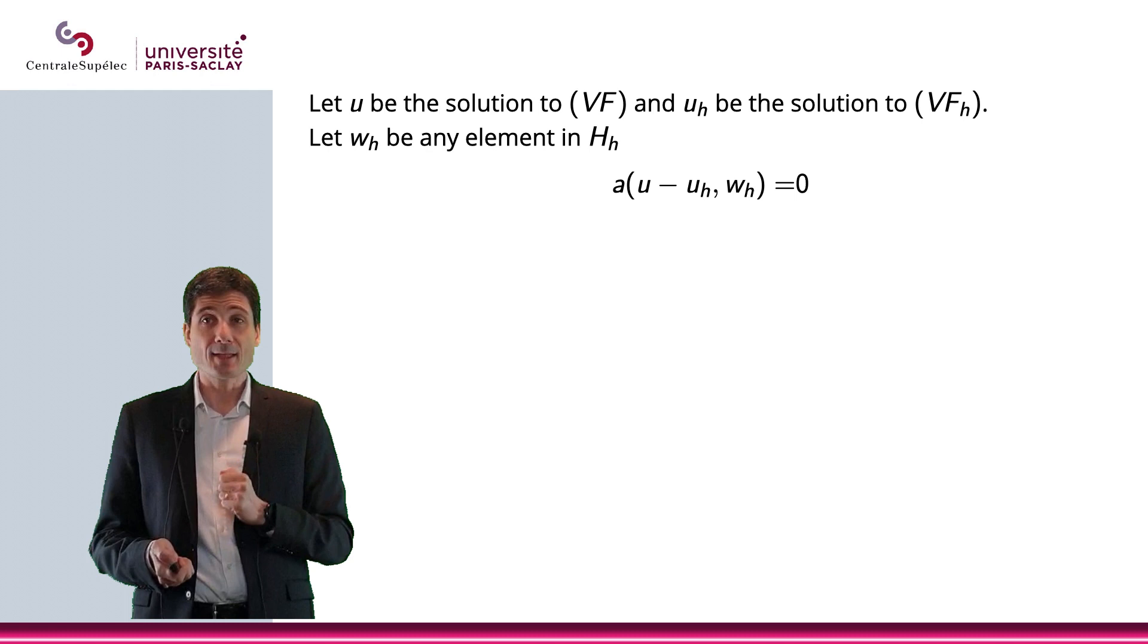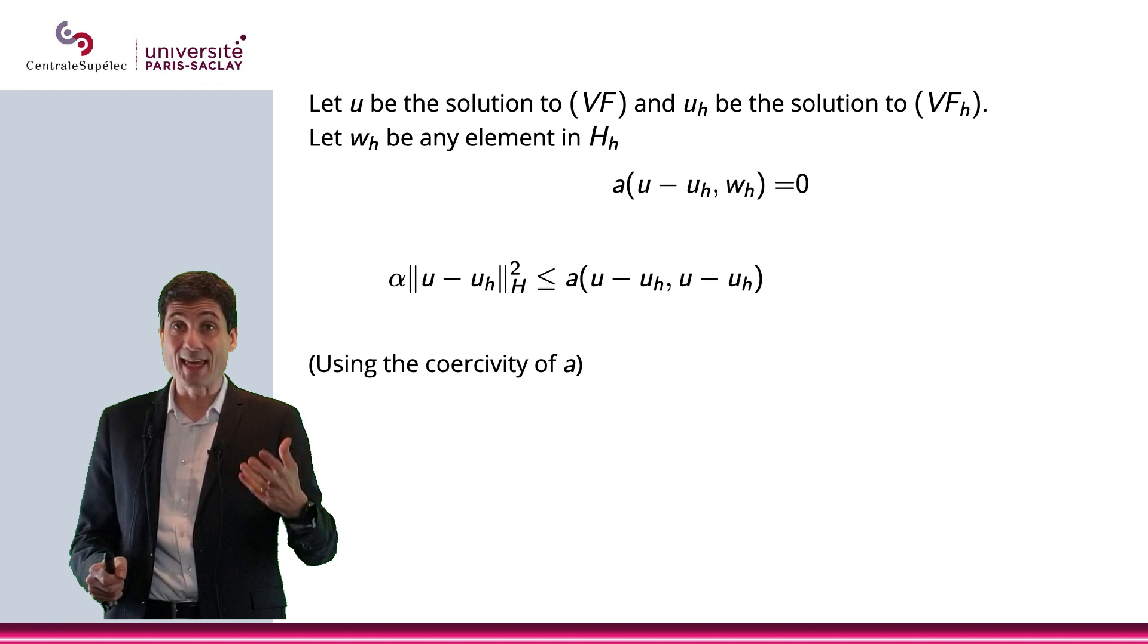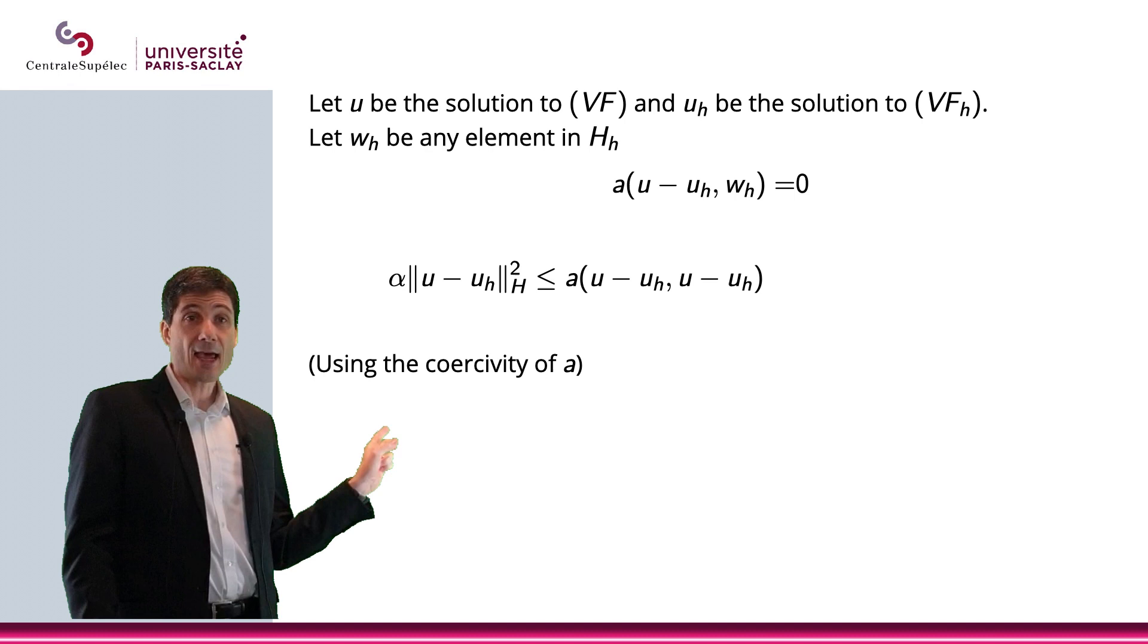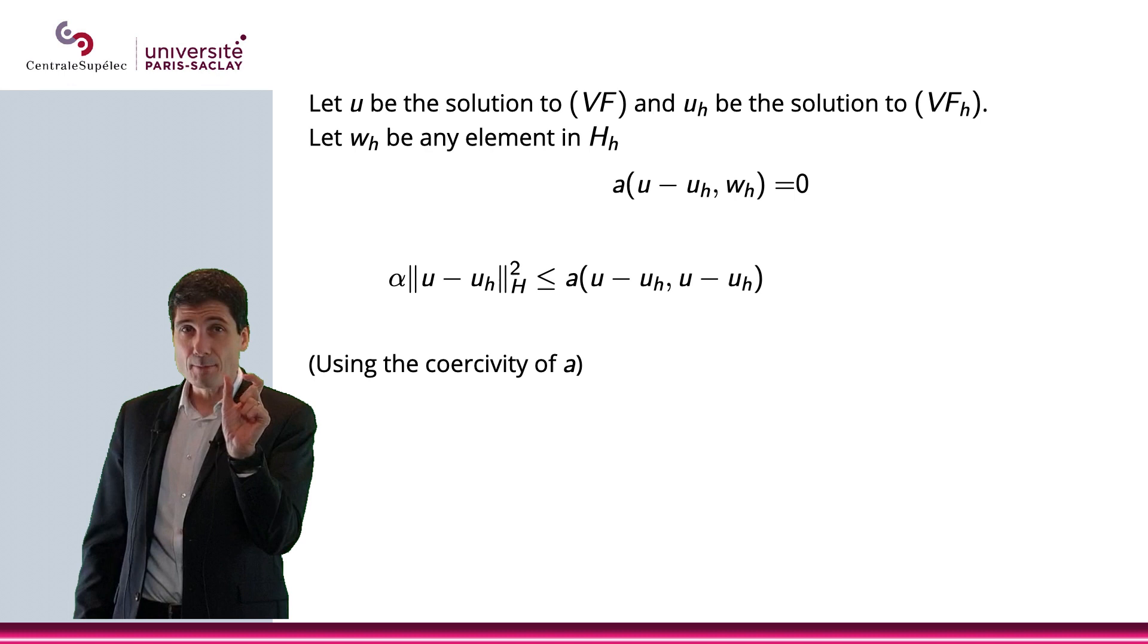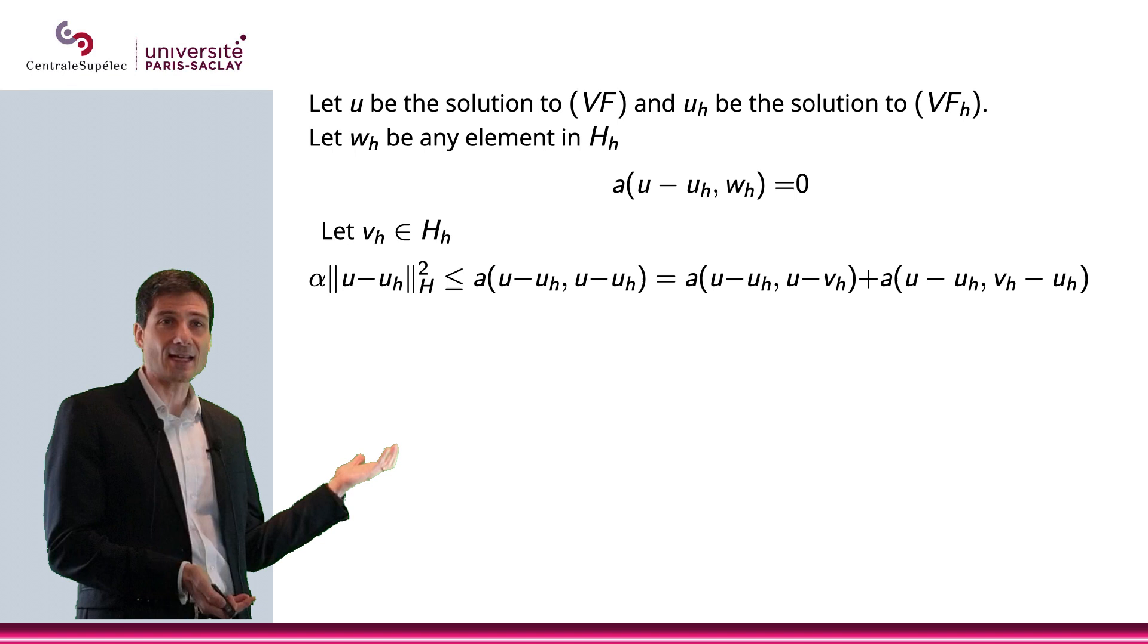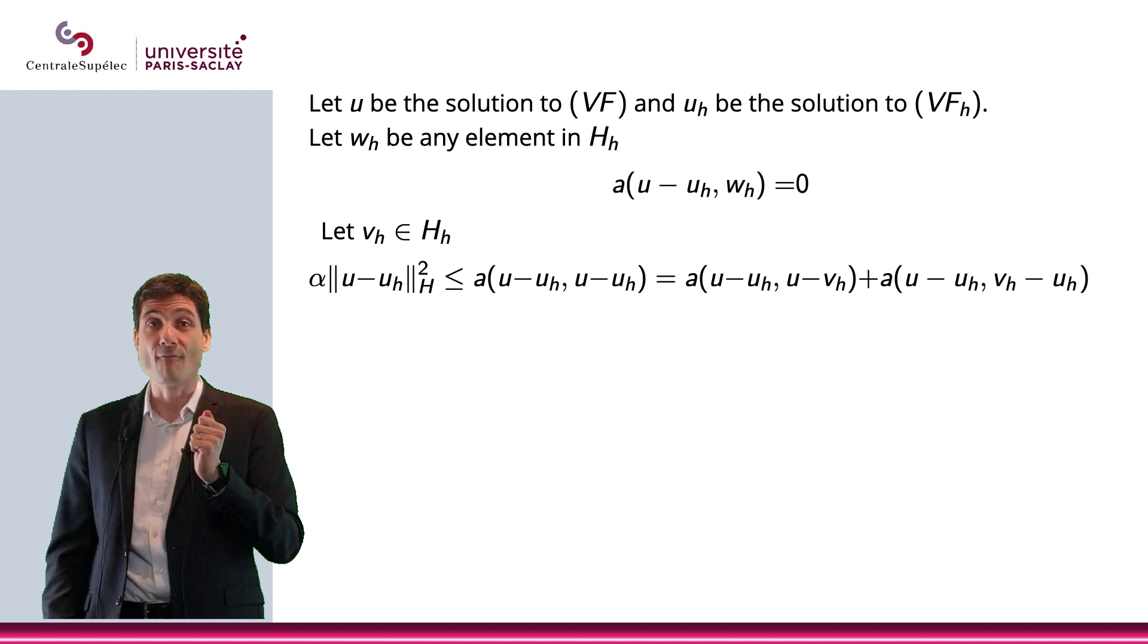So, let's consider our bilinear form a(u - uₕ, u - uₕ). And what I know is that a is coercive, so I can bound it below by α, which is the coercivity constant, ||u - uₕ||²ₕ. Now, a(u - uₕ, u - uₕ), well, u - uₕ can be written u - vₕ + vₕ - uₕ, right? So, using bilinearity, which implies the linearity in the second variable, then that a(u - uₕ, u - uₕ) can be written a(u - uₕ, u - vₕ) + a(u - uₕ, vₕ - uₕ).